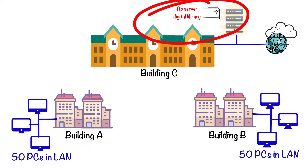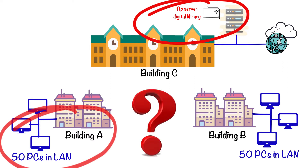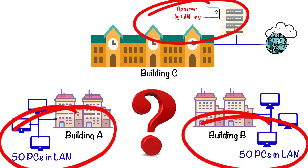Students can upload and download their projects or study material from the FTP server. Building C also has a digital library where students can access it from their PCs. Additionally, building C has internet connectivity so that students can connect to the internet for their online research.